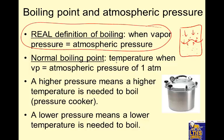Normal boiling point is what you're used to — the temperature at which the vapor pressure equals atmospheric pressure, but that atmospheric pressure is 1 atm. So normal boiling point is defined as the temperature when the vapor pressure of the liquid equals atmospheric pressure defined as 1 atm. Hey, that's standard pressure, 1 atm — that's when the normal boiling point is measured.